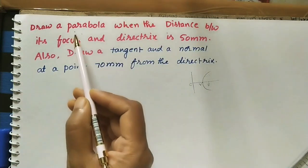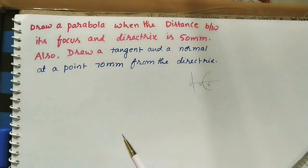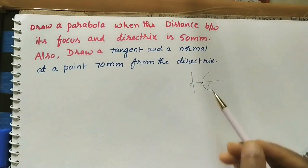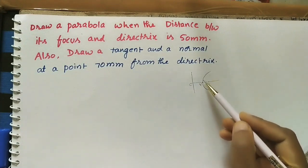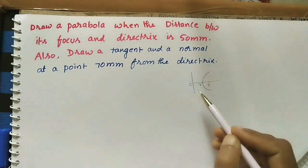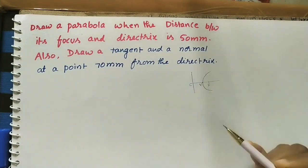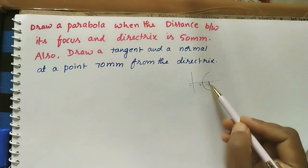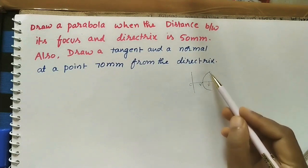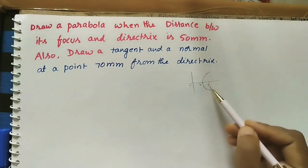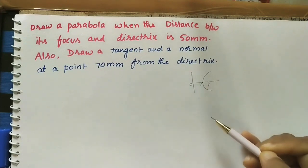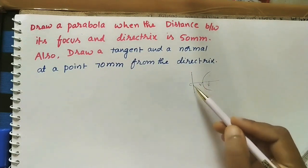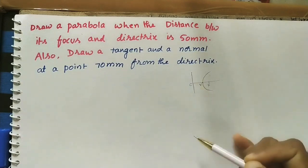Hello friends, today we will discuss how to draw the parabola by using the eccentricity method or general method. Here roughly I did one parabola and this is the axis for this curve. It has one fixed point for this curve called the focus, and it has one fixed straight line called the directrix.